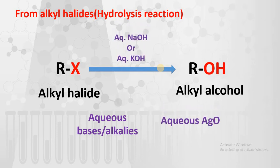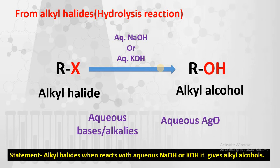The aqueous bases that are used are strong bases like aqueous sodium hydroxide or aqueous potassium hydroxide. Also, aqueous silver oxide is used because it produces silver hydroxide which acts as a strong base. Alkyl halides when reacted with aqueous NaOH or KOH gives alkyl alcohols.